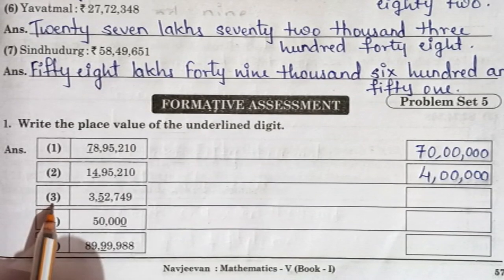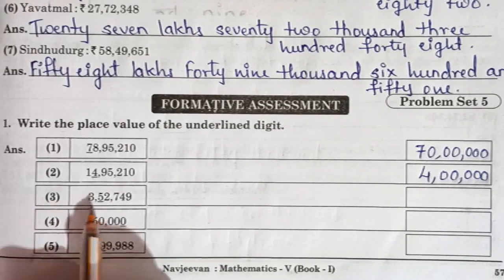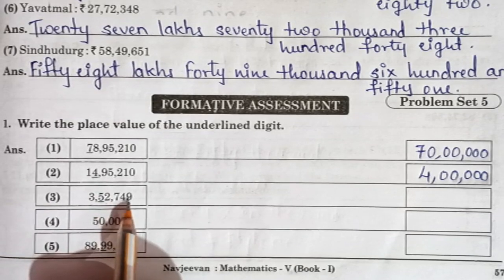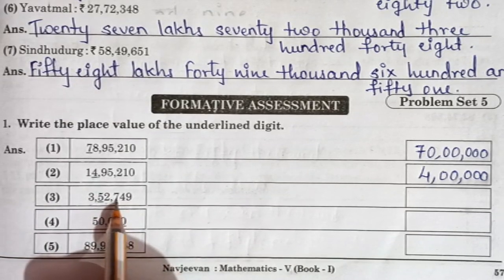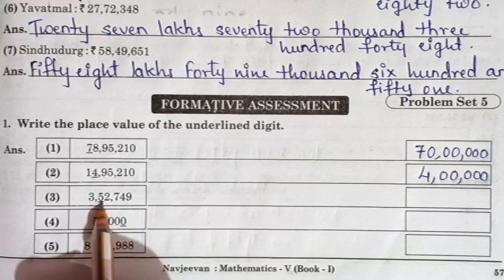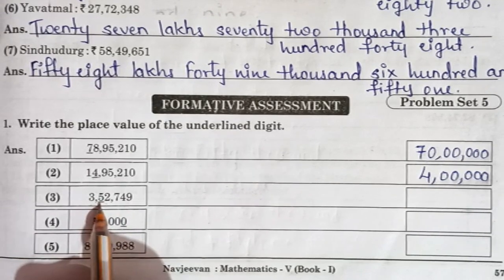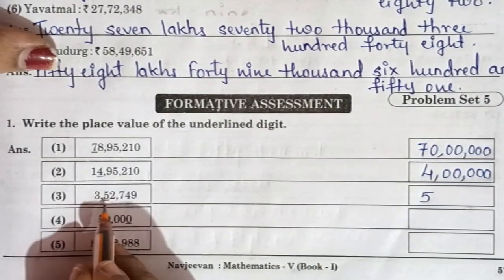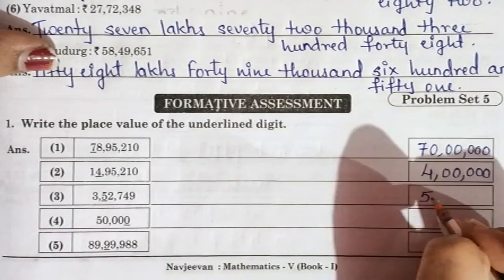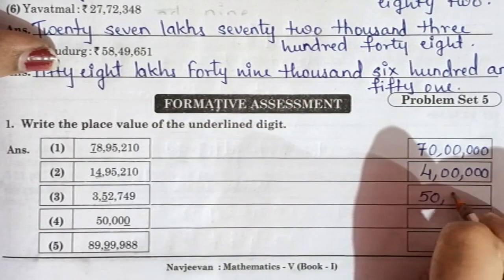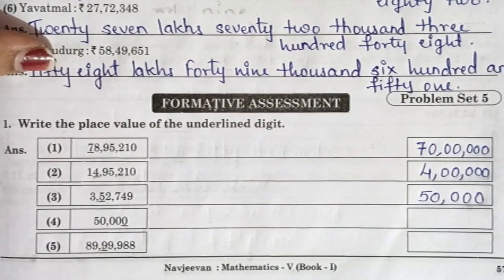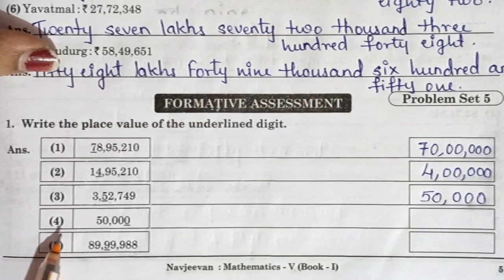Third number is 3,52,749. Units, tens, hundreds, thousands — 5 is at ten-thousands place. So we write 5 and four zeros: 50,000. Then thousands place zero, comma, hundreds, tens, and units — write zero. Fourth number is 50,000 and the digit 0 is underlined. It is at units place only, so you write 0 — there is no other value.